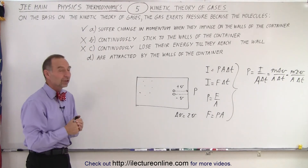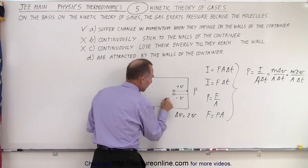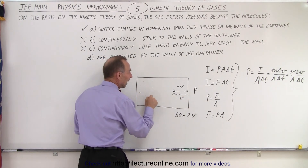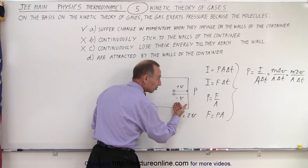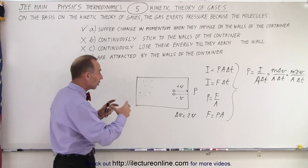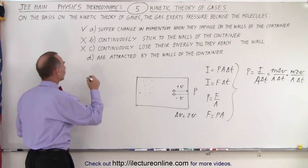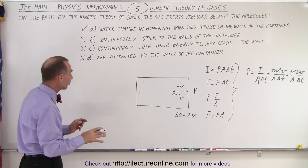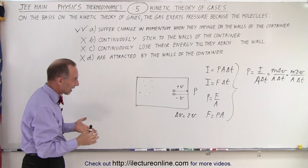Finally, option D: molecules are attracted by the walls of the container. Well, if that were the case, they would move faster as they get close to a wall and slower as they get away from it. And since they're attracted, would they stick to the wall? Would they come back at a slower velocity? That doesn't appear to be the case either, and all the molecules would constantly be changing velocity throughout — that also doesn't seem right. So those three answers are not good answers.